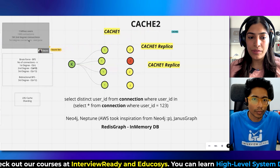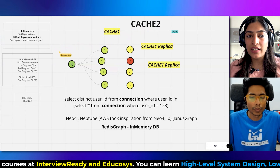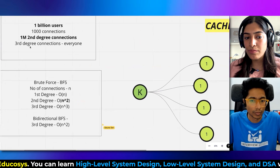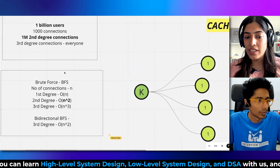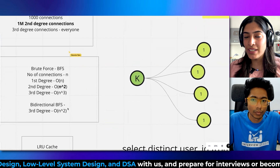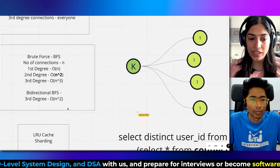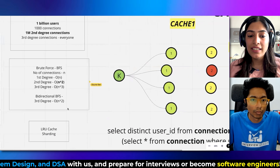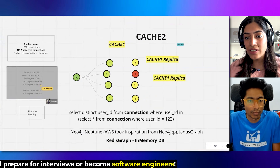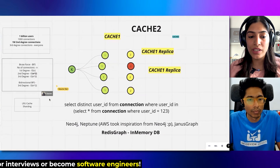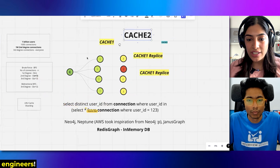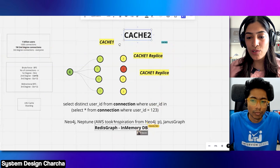To quickly summarize: we started with our capacity estimation — 1 billion users. We checked out the brute force approach and understood it will not work. Then we considered bi-directional BFS, and even that would not be a very optimized solution. So we talked about caching, graph databases like Neo4j and Redis Graph, and replication for fault tolerance.